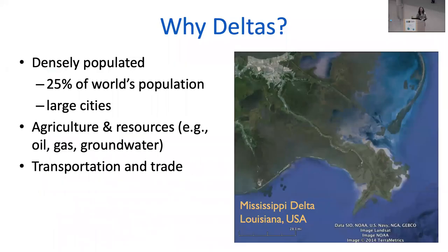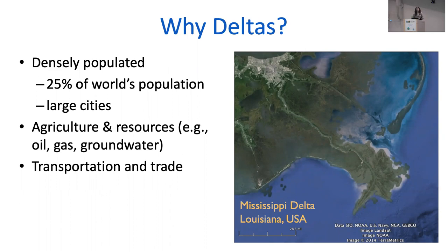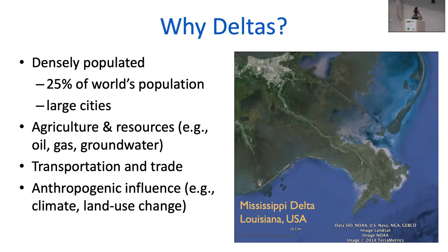I don't think this crowd needs a ton of motivation, but deltas are really important landscapes. They've long been ideal for human settlement — they are flat and fertile, so people have lived on them for a long time. Currently they tend to be densely populated landscapes, and they're really important for transportation and trade. They have very important waterways and host all kinds of natural resources. But despite the importance of these landscapes, we don't fully understand the drivers of delta morphologies, especially regarding how humans have been impacting morphology over recent history and farther in the past.